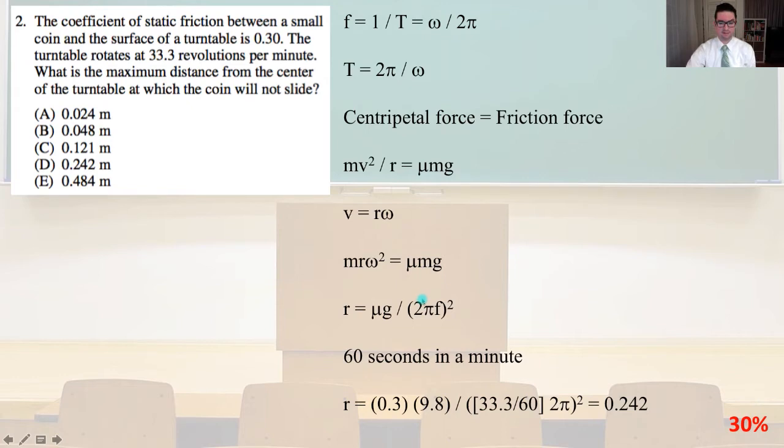So mrω² equals μmg, and r equals μg over (2πf)². Let's remember there's 60 seconds in a minute. So r equals 0.3 times 9.8 divided by [(33.3/60) times 2π]², and that equals 0.242. And that is answer D.